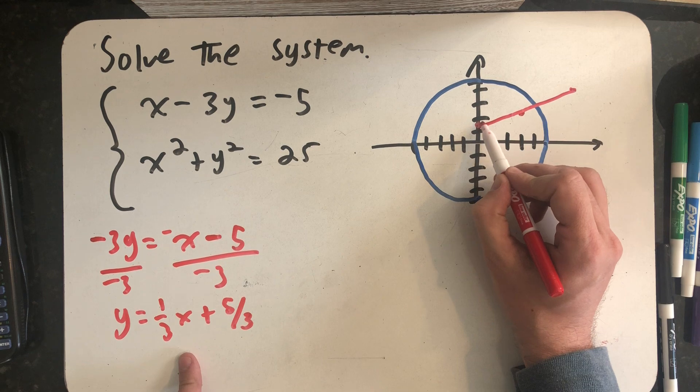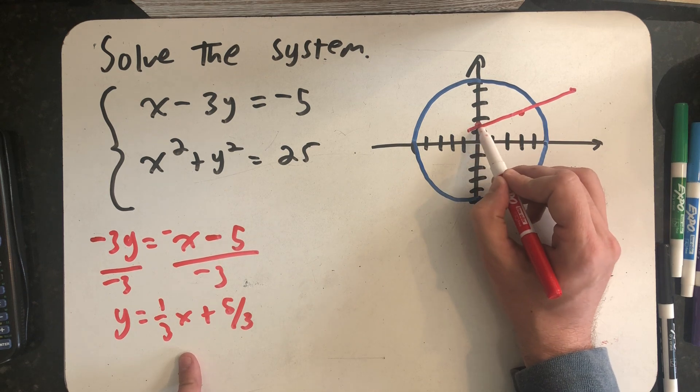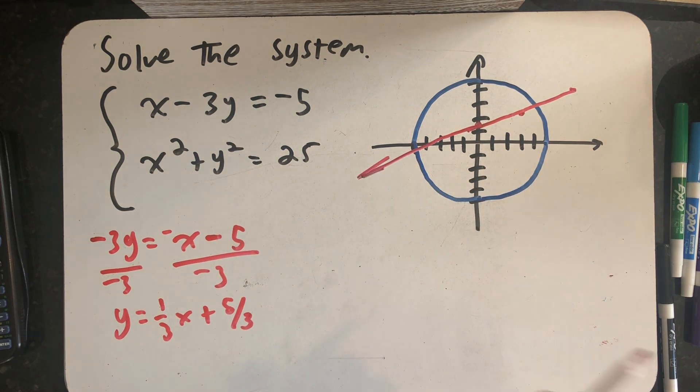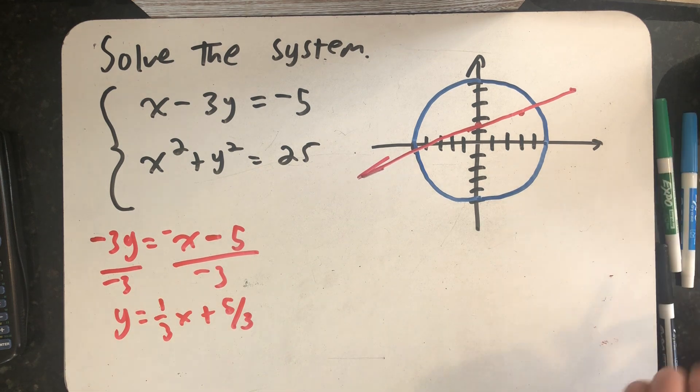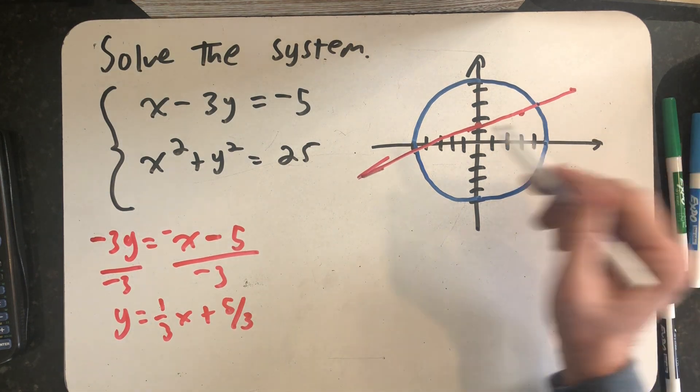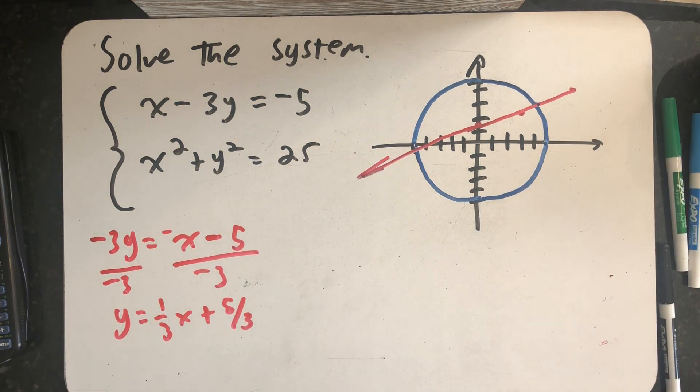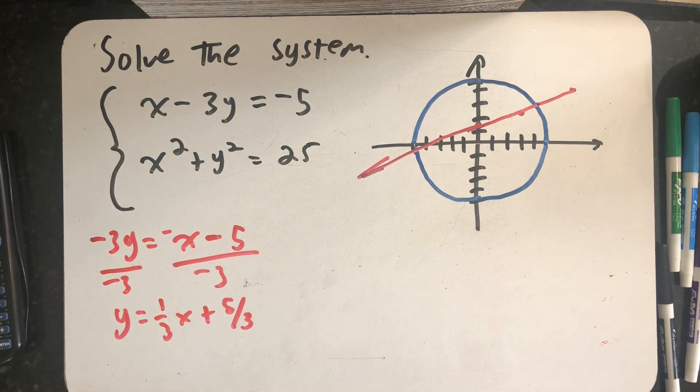Having graphed the system somewhat accurately, I now expect two solutions. I should see a solution over here and a solution over here. So now I need to solve the system.